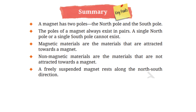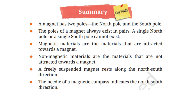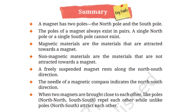A freely suspended magnet rests along the north-south direction. The needle of a magnetic compass indicates the north-south direction. When two magnets are brought close to each other, like poles — that is north-north and south-south — repel each other, while unlike poles — north and south — attract each other.